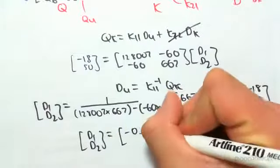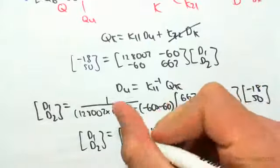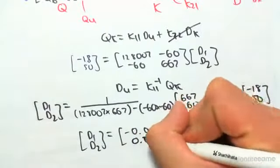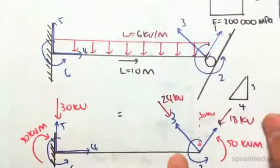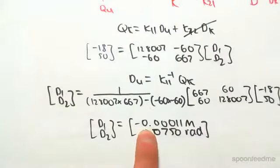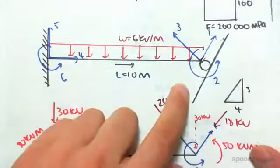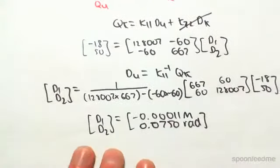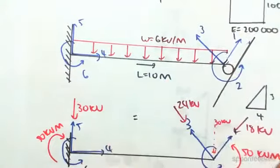equal -0.00011 meters and 0.0750 radians. To remind you what these are: displacement one is along node one, so we're getting a displacement of -0.00011 meters—in other words, this support is going to go down that amount. D2 is rotating by 0.075 radians, so it's rotating around there by about that amount.